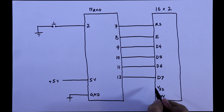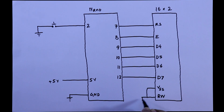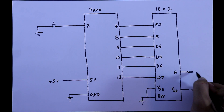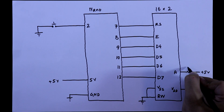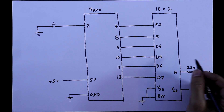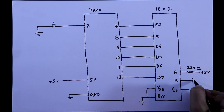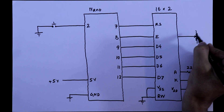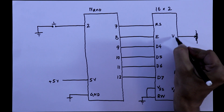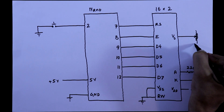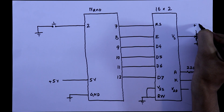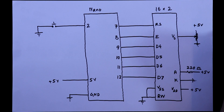VSS and RW pins of the display will be connected to ground, and VDD to plus 5V. The anode pin of the LED is connected to plus 5V through a 220 ohm resistor and the cathode is connected to ground. We also need a potentiometer — the middle pin of the potentiometer is connected to the V0 pin of the display. One pin of the potentiometer is connected to ground and the other to plus 5V. This completes the connection.